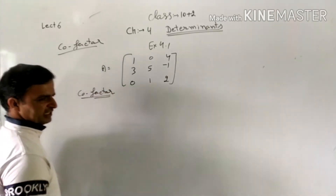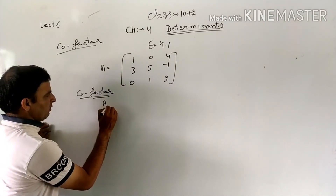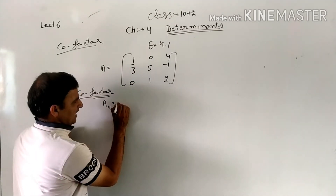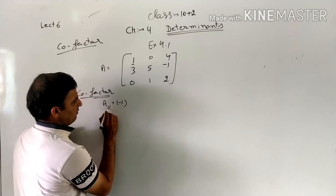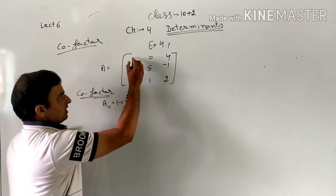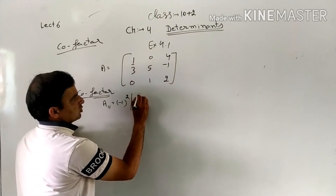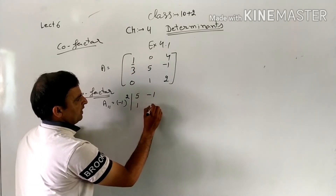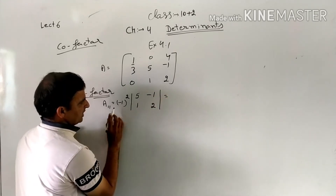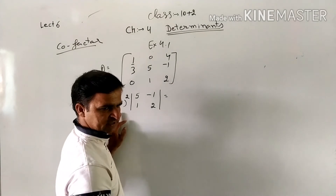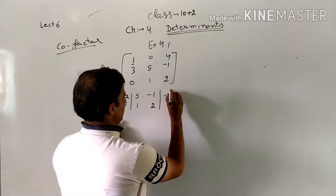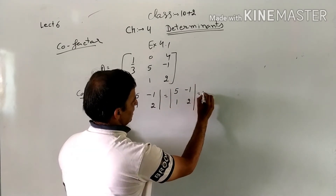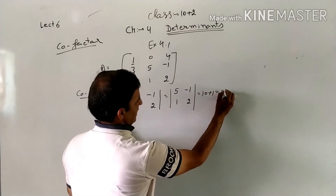A11: the co-factor at position 1,1. First, (-1)^(1+1) = (-1)^2 = +1. Deleting the first row and column leaves [5, -1; 1, 2]. We know that if (-1) raised to an even power, the number becomes positive, so it is +1. Determinant = 10 - (-1) = 11. So A11 = 11.